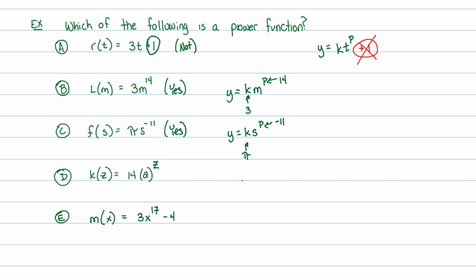The next one: is it written as y equals some number times the variable to a power? It does have a number out front — that's a 14 — but unfortunately the power is a variable in this case. This is not a power function; it's a different kind of function we'll encounter later. Even though it has a power in it, which is what's deceiving, if your power is a variable, it's not considered a power function.